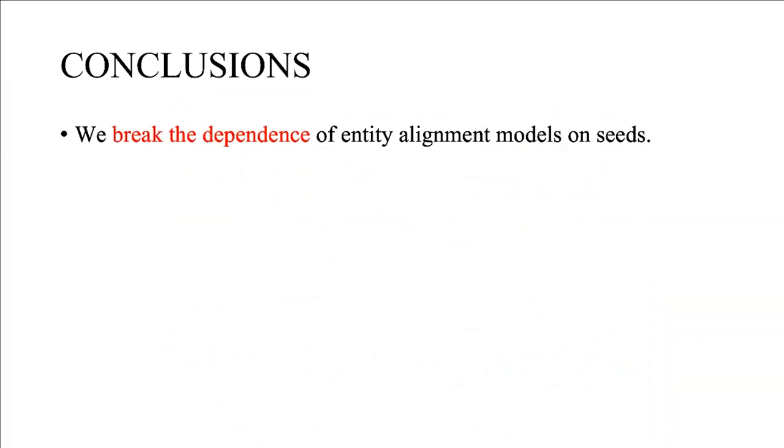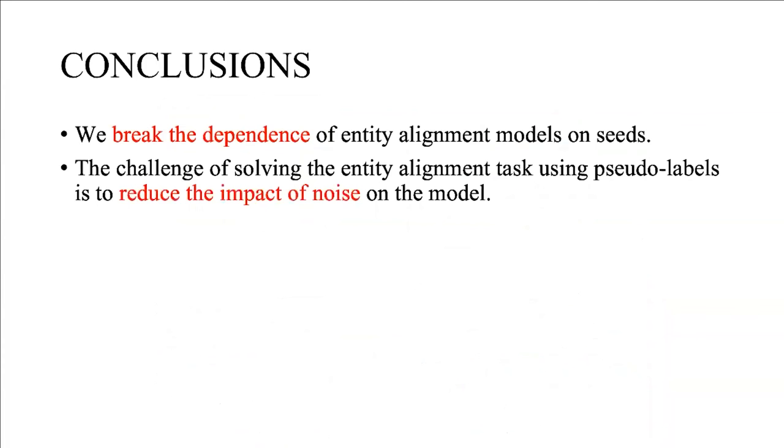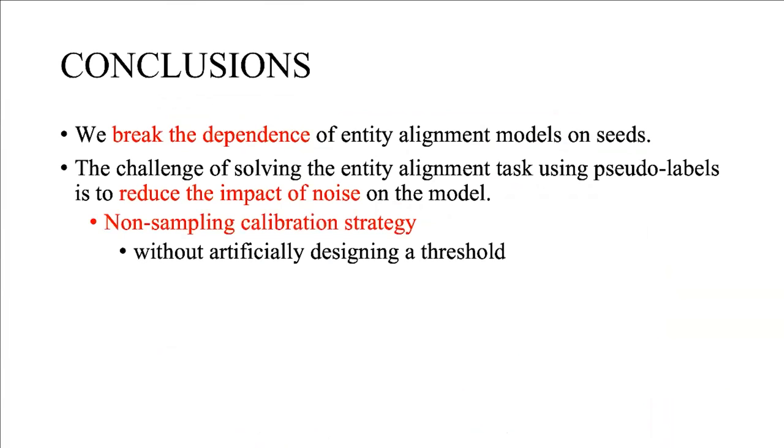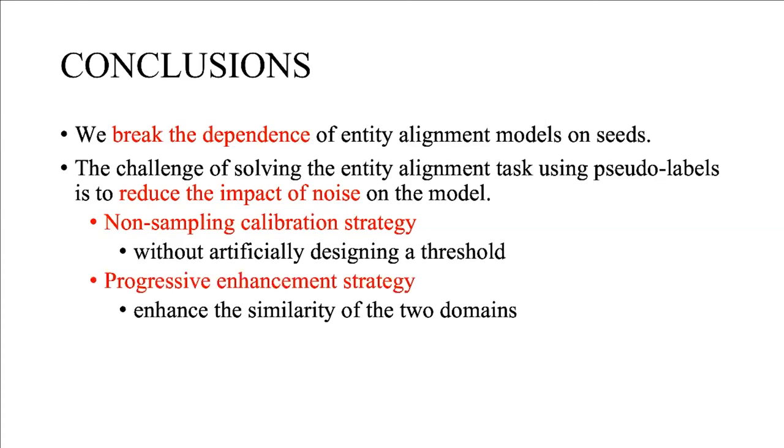Conclusion: First, we break the dependence of entity alignment models on seeds. Second, the challenge of solving the entity alignment task using pseudo-labels is to reduce the impact of noise on the model. We define two strategies to mitigate the noise problem. Considering the existence of errors in pseudo-labels, a novel non-sampling calibration strategy without any manually designed thresholds is proposed to reduce the influence of noise labels on entity representation learning. The drawback with pseudo-labels is that if the domains are not similar enough, it is not easy to obtain high-quality pseudo-labels since the labeling noise might be too high to hurt performance. Therefore, a progressive enhancement strategy is proposed to enhance the similarity of the two domains.